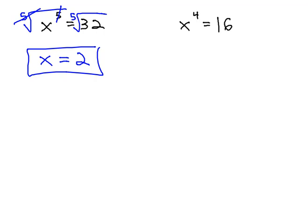The even root property, though, has one slight adjustment that we need to be aware of. The process is exactly the same. To get rid of a fourth power, we'll take a fourth root of both sides.